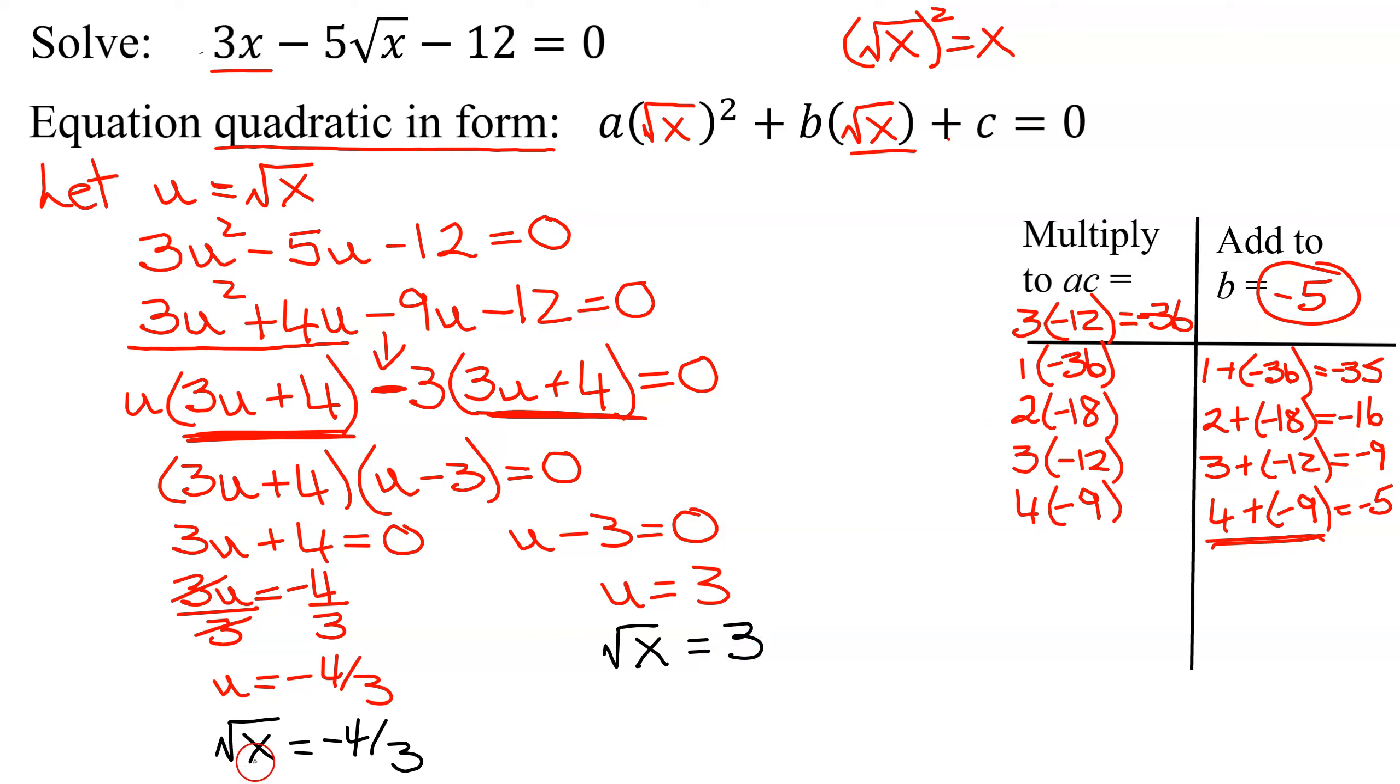Well, can the square root of a real number ever equal a negative number? No. So that solution is extraneous. Can the square root of x equal positive 3? Yes. So we're going to solve this by squaring both sides of the equation. So the square root of x all squared is x equals 3 squared is 9.